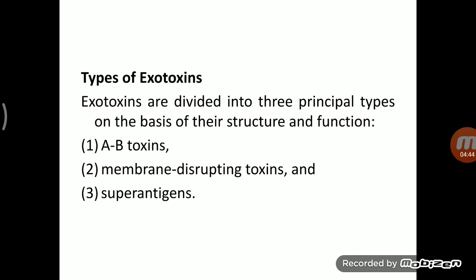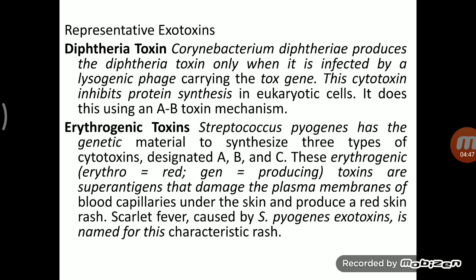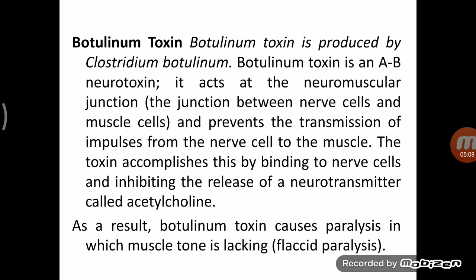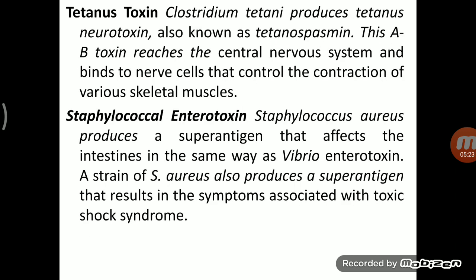Examples of exotoxins: diphtheria toxin produced by Corynebacterium diphtheriae; erythrogenic toxin produced by Streptococcus pyogenes; botulinum toxin produced by Clostridium botulinum, which directly affects neurotransmitter release — it inhibits the release of neurotransmitter, causing a paralysis-like effect; and tetanus toxin produced by Clostridium tetani.